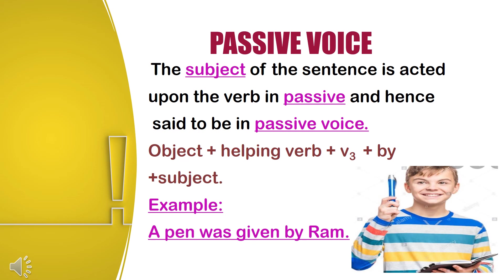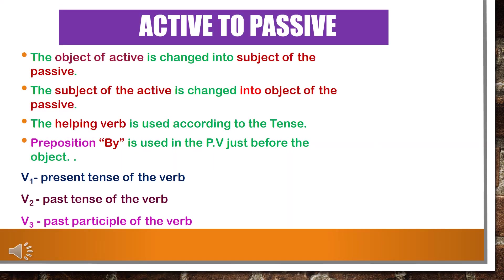Let's see the example. 'A pen was given by Wong.' Here the pen is the subject but doesn't do the action. Now we will see the rules of active and passive voice. Rules are very important to change a sentence from active voice into passive voice, so you have to learn the rules in order to change the sentence.